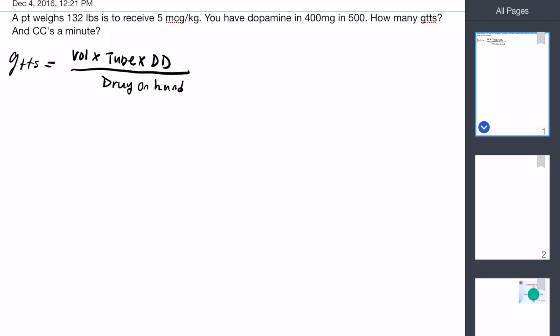It's usually, you know, in this example the drug on hand is going to be our 400 milligrams. This is our volume in 500. So let's just start putting in what we do know. We do know that we have a volume of 500. We know our dropper is going to be 60 because it's for micrograms. We don't know our desired dose yet, so we'll figure that out, and we do know that we have 400 milligrams right now of this medication.